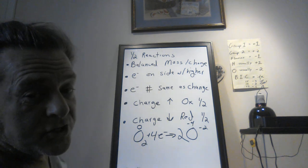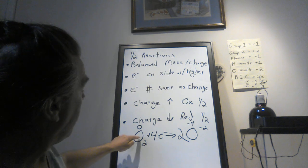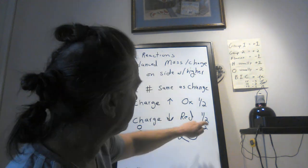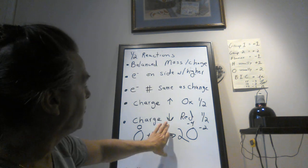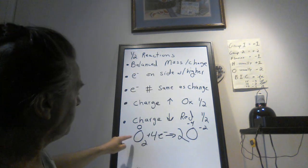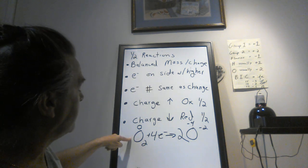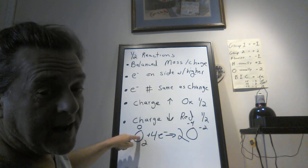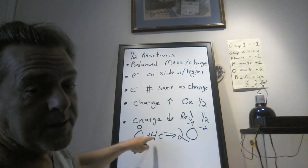So this is a reduction half reaction. Oxygen at zero goes down to negative two, so it's reduction. Four electrons are going to go on the left with the oxygen, so both sides are negative four. This is a reduction. And oxygen is an oxidizing agent because oxygen is reducing—something else is going to have to oxidize. So these electrons that it is gaining, something else is losing them.